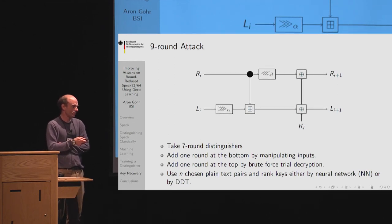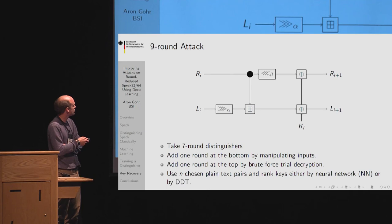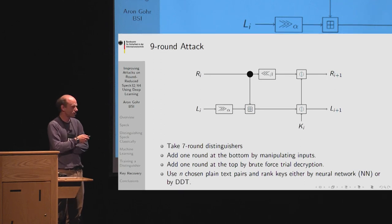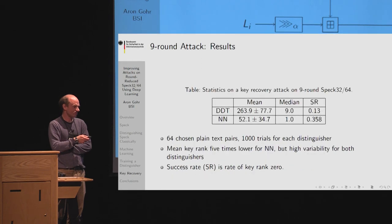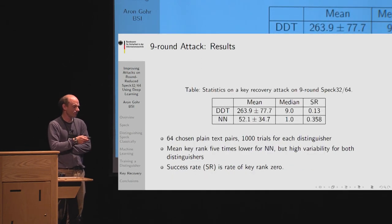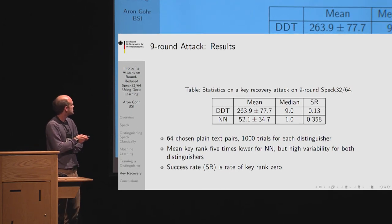To build a nine-round attack, we take the seven-round distinguisher, add one round at the bottom by manipulating inputs — possible because the first key addition happens after the only nonlinear operation (modular addition) — and add one round at the top by brute-force trial decryption. Using 64 chosen plaintext pairs and classifying with the neural network gives much better mean and median key ranks than the difference distribution table. For instance, the median key rank is 1 for the neural network versus 9 for the DDT, with the mean roughly five times lower.